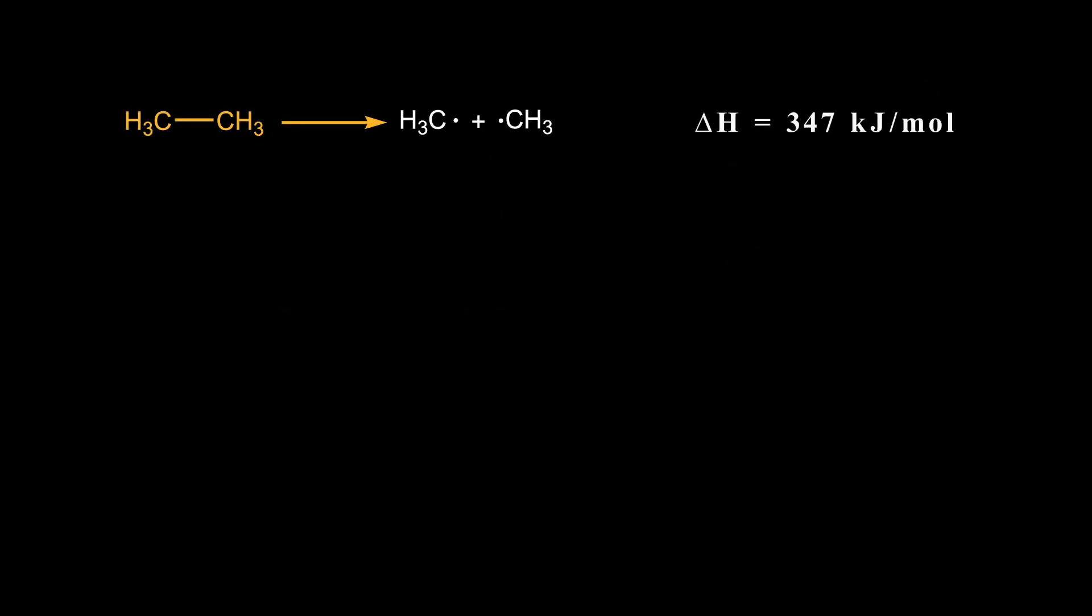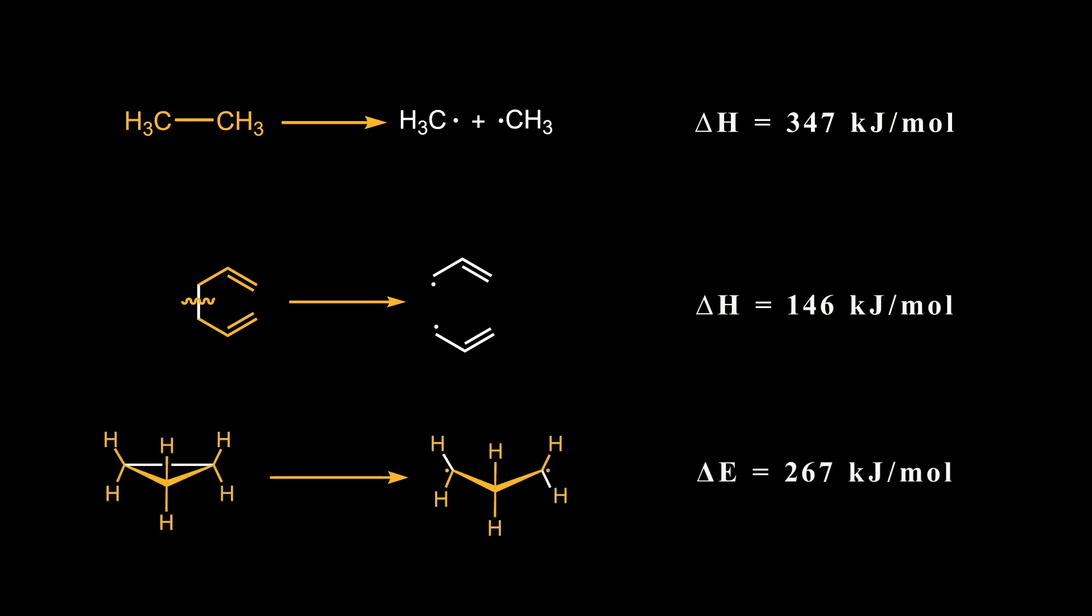Till now, we've compared the energy required for breaking the carbon-carbon bond in ethane, the allyl radical, and cyclopropene, and found that this energy in these two systems is lower than in ethane. Now, what happens if we combine the cyclopropene ring and allylic system to calculate the energy required for breaking the carbon-carbon bond?